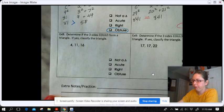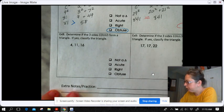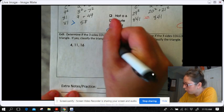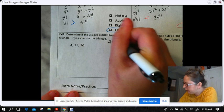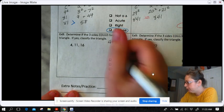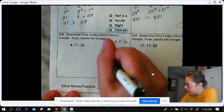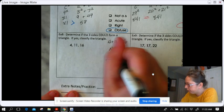So let's take a look at example 8. We are almost finished. So first thing I do is determine, does 4 plus 11 equal a number greater than 16? The answer is no. 4 plus 11 is 15. So this would not even be a triangle.